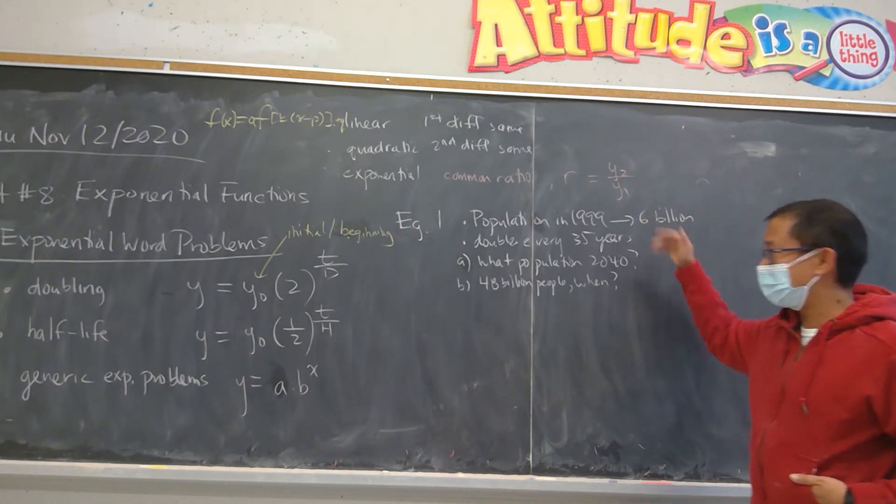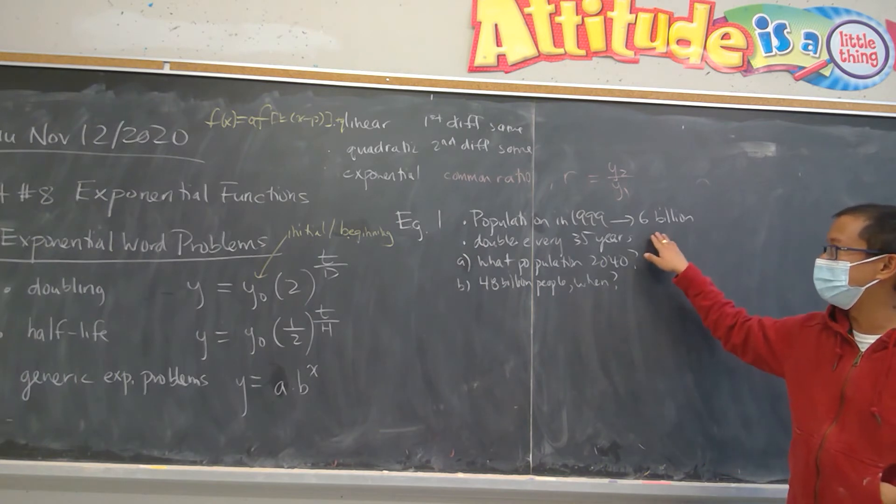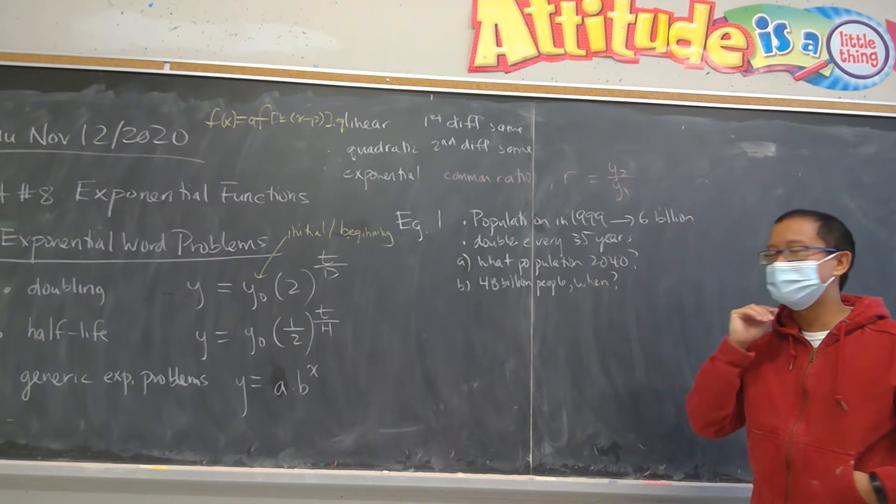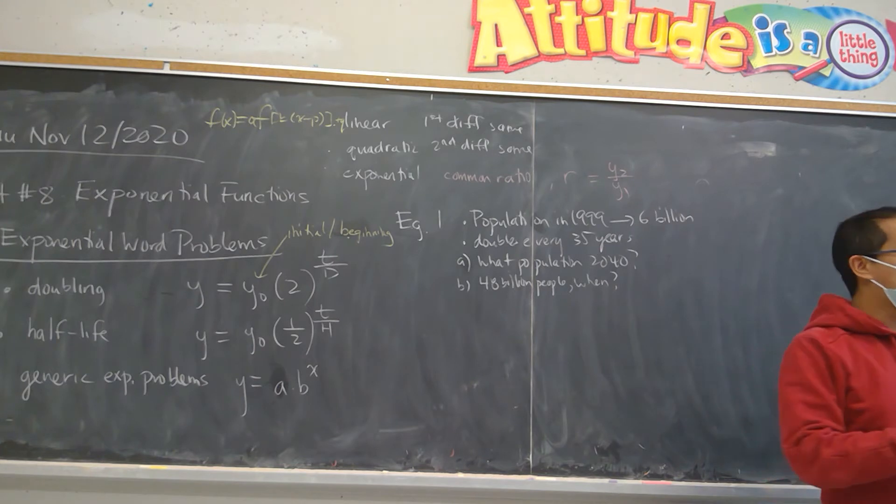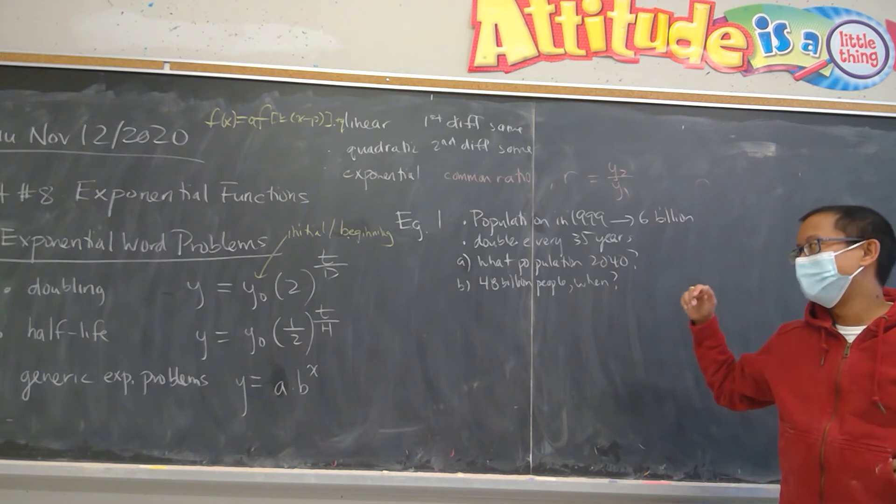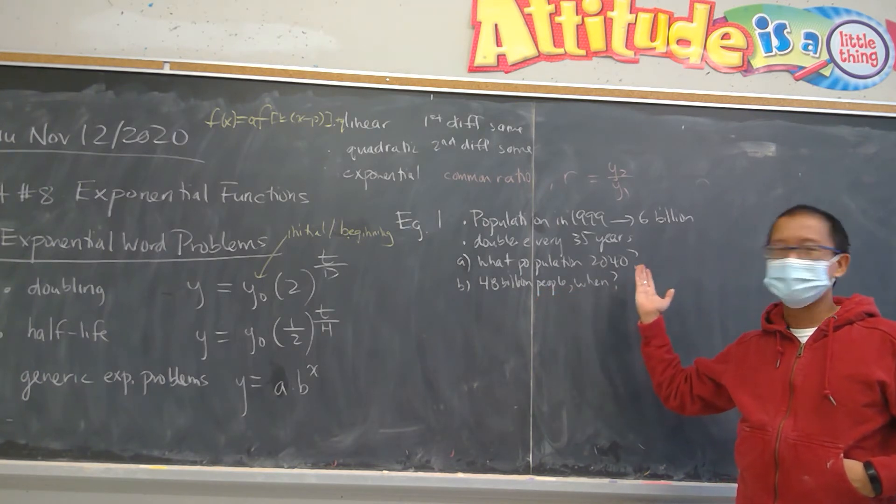They gave you some detailed information that the population of the planet, they did a census in 1999 and they came to around 6 billion people on this planet at that time. They've also did some kind of study and they noticed that maybe the population is doubling every 35 years. So the two questions we're trying to predict is what's the population going to be in 2040? And then of course, if there's 40 billion people on the planet when would this happen?